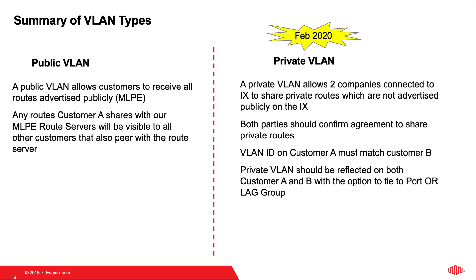Summary of VLAN types. There's the public VLAN. A public VLAN allows customers to receive all routes advertised publicly, which we use on our MLPE, or multilateral peering exchange. Any routes customer A shares with our MLPE route servers will be visible to all other customers that also peer with the route server. A private VLAN, which was released in our February 2020 release, allows two companies connected to the IX to share private routes which are not advertised publicly on the IX.